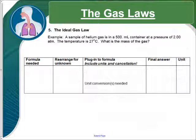Okay, our second example of the ideal gas law. A sample of helium gas is in a 500 milliliter container at a pressure of 2 atmospheres. The temperature is 27 degrees Celsius. What is the mass of the gas?